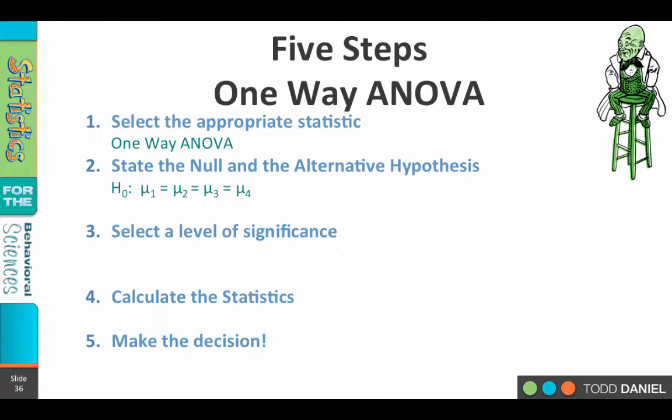Our alternative hypothesis would therefore be μ₁ ≠ μ₂ ≠ μ₃ ≠ μ₄. So what we are saying is that there are differences between all of the regions. We're not using planned contrasts here, we're just using the simplest way of writing the null and the alternative hypotheses.